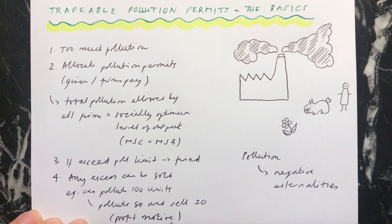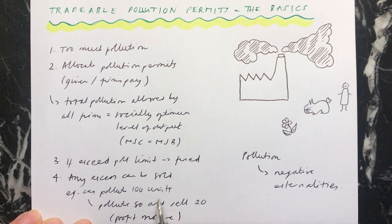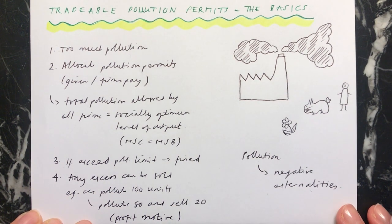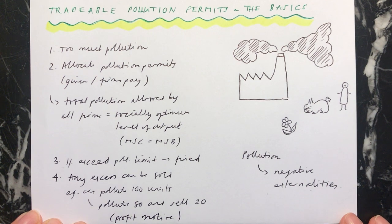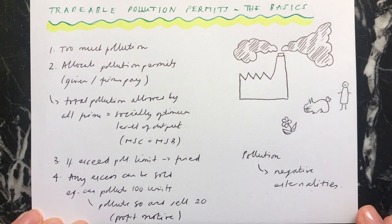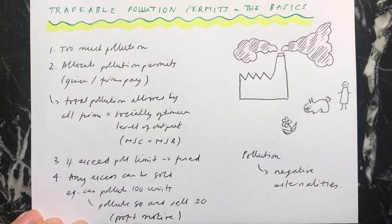By having this profit motive, they're less likely to want to pollute and more likely to want to invest in green technology. So overall we'll have fewer negative externalities. What will develop is a market for these permits, and therefore this method of government intervention is creating a new market for these permits. Through the market mechanism, the idea is that the amount of pollution will be reduced.